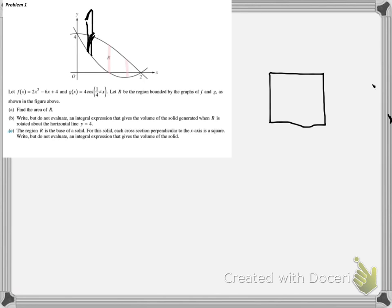So each of the cross sections is a square, right? But do not evaluate an integral expression that gives the volume of the solid. So this is where that acronym becomes really nice again.